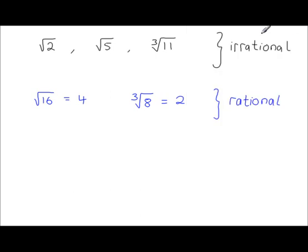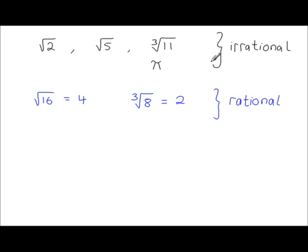We have irrational numbers like these. They're not limited to just surds — irrational numbers include pi. Pi has a decimal value that goes on forever without repeating, and there's no pattern to the value of pi.